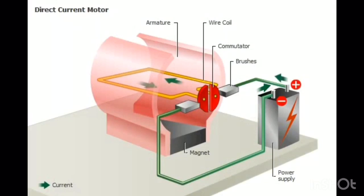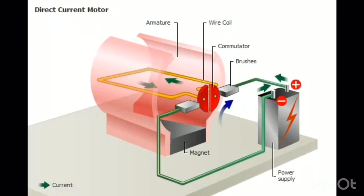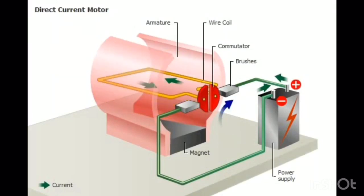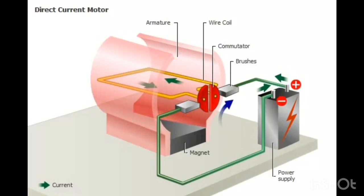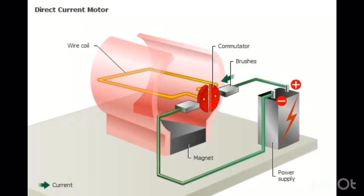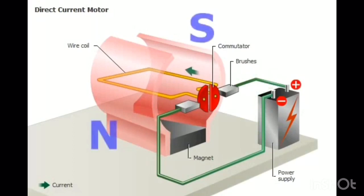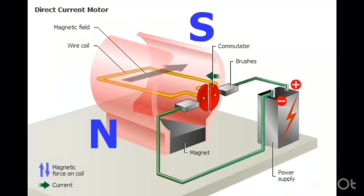The commutator is a kind of switch that changes the direction of current flow in the coil as it turns. The electric current flows from the source to the motor and back to the source in one direction. The current-carrying wires in the coil experience forces in the presence of the magnetic field. When current is flowing through the coil in the direction shown,